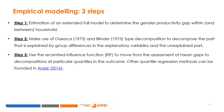Three stages are used in the estimation of the model. Stage 1 is the estimation of an extended full model to determine the gender productivity gap within and between households. Stage 2 makes use of Oaxaca's (1973) and Blinder's (1973) type decomposition to break down the part that is explained by group differences in the explanatory variables and the unexplained part. Stage 3 uses the re-centered influence function (RIF) to move from the assessment of mean gaps to decompositions at quantiles in the outcome.